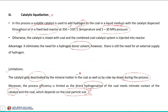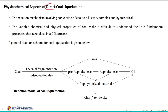Now let us discuss the physicochemical aspects of direct coal liquefaction. The reaction mechanism involved in converting coal to oil is very complex due to the hypothetical and variable chemical and physical properties of coal. The varying properties between different types of coal — and even between samples of the same type — make it difficult to understand the true fundamental processes that take place during direct coal liquefaction.